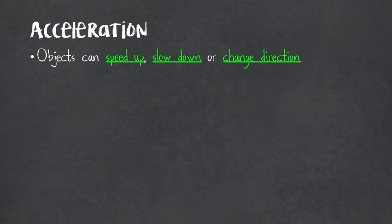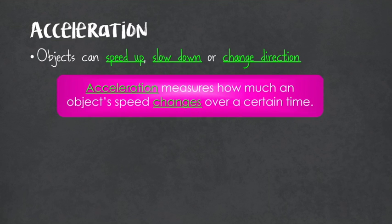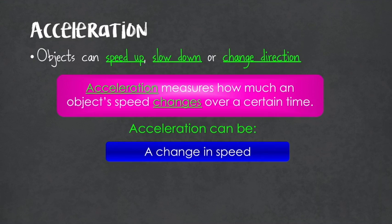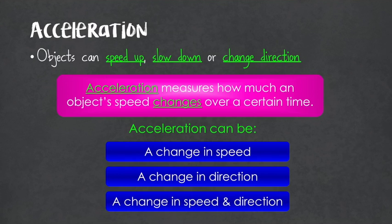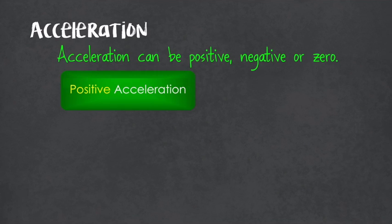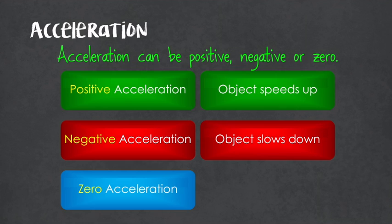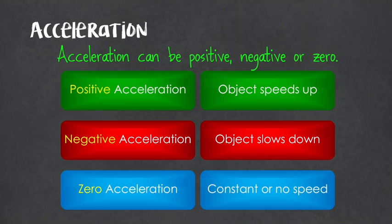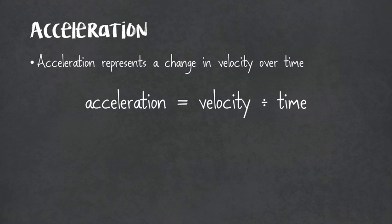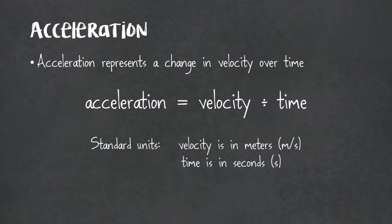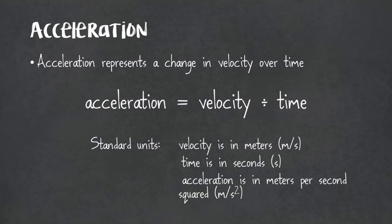What about when objects don't have a constant speed or velocity? Objects are capable of speeding up, slowing down, or changing direction — that's called acceleration. Acceleration measures how much an object's speed or velocity changes over a certain time. It can denote a change in speed, a change in direction, or both. Acceleration can be positive, negative, or zero. Positive acceleration means speeding up; negative acceleration means slowing down; zero acceleration means either a constant speed or no movement at all. The formula is acceleration equals change in velocity over time. Velocity is in meters per second and time is in seconds, so acceleration is in meters per second squared.